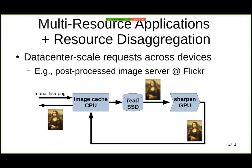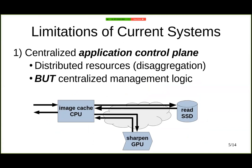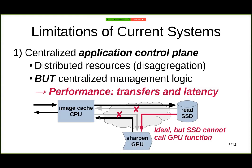If we look at the system support for this type of application, we are going to see two main limitations. The first is that while we have highly distributed resources because of data center disaggregation, the logic for managing the interaction between resources is centralized. So in this example, the CPU application sends a request to the SSD, receives the result, forwards this image to the GPU to trigger the sharpening operation, receives the result, and then serves it to the client. Ideally, we would want the SSD to send the data to the GPU and trigger the GPU function without further processing from the CPU.